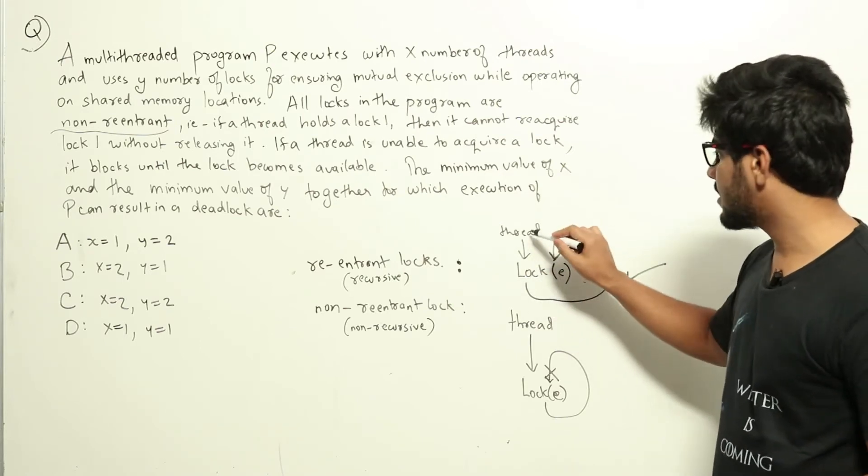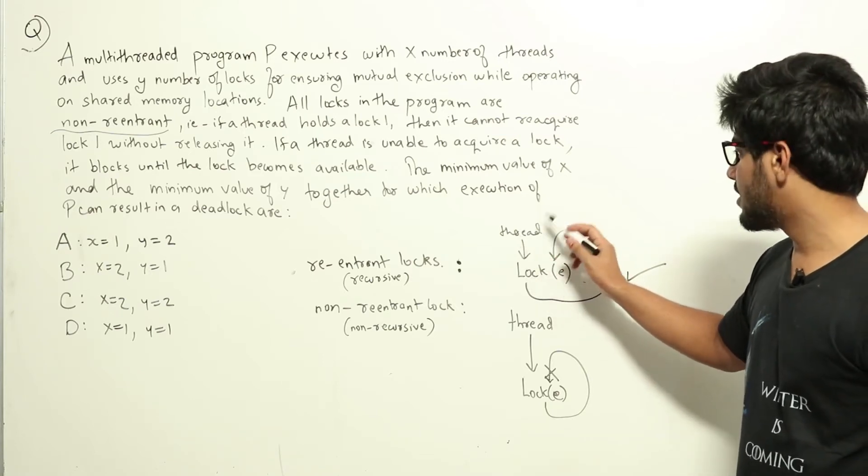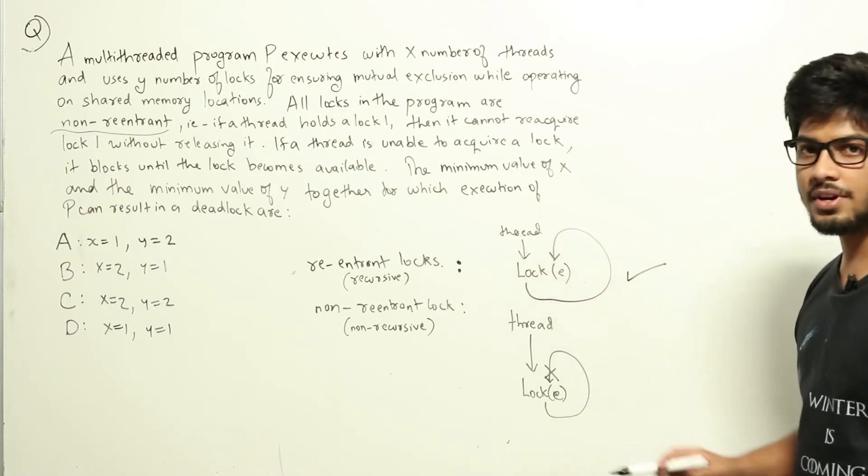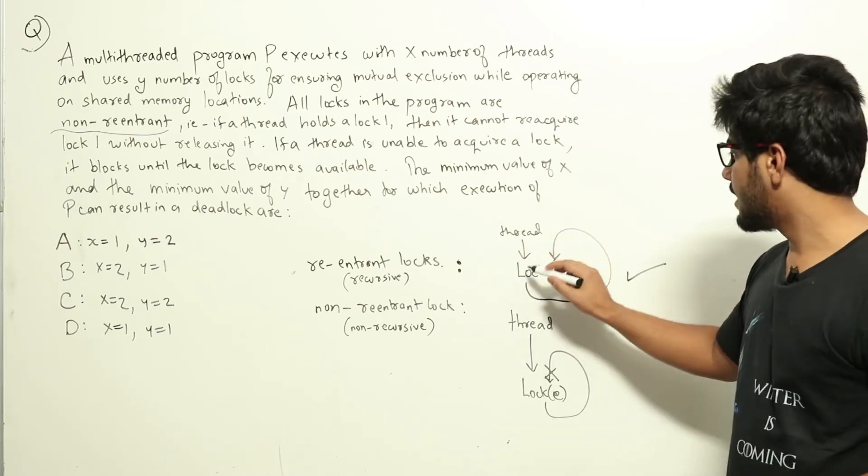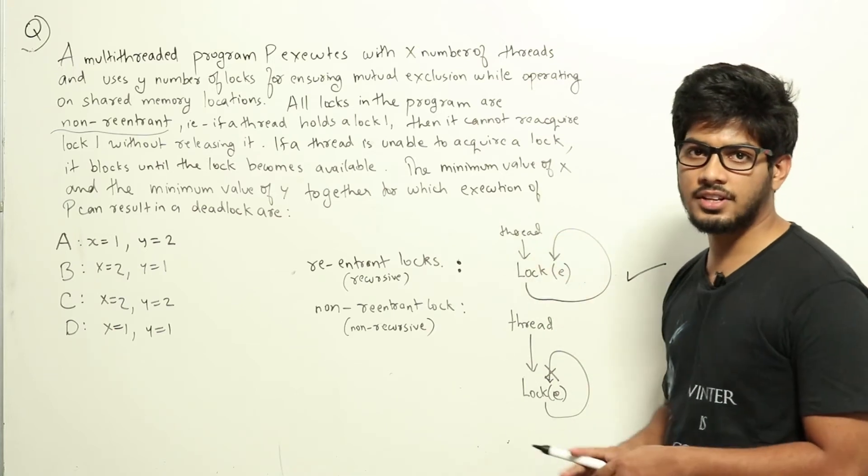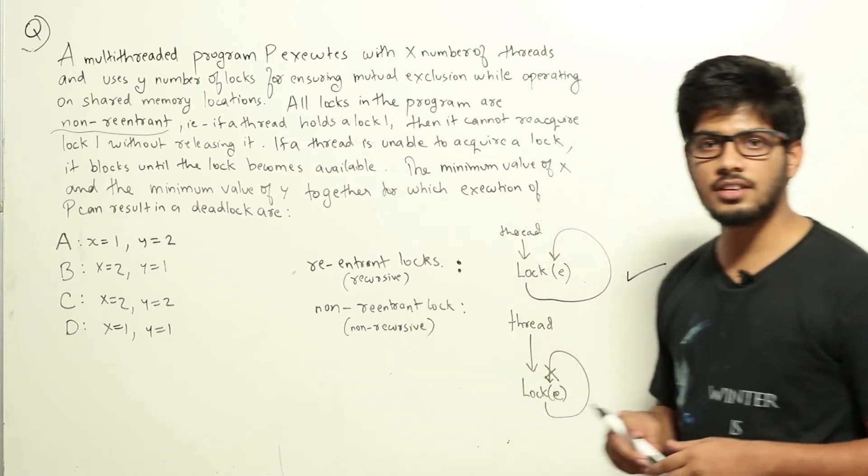It sees that this current thread is the owner of this current lock and this thread has the lock already. So it will allow this statement to pass through, which means that this lock can be re-acquired by the thread. A lock can be re-acquired by the owner of the thread again. These are re-entrant locks. The other kind is non-reentrant locks or non-recursive locks.